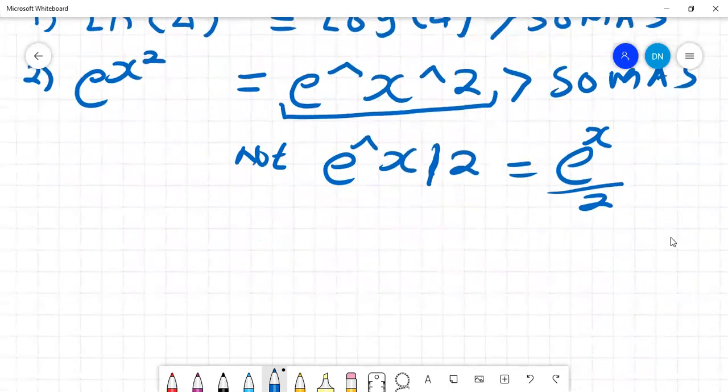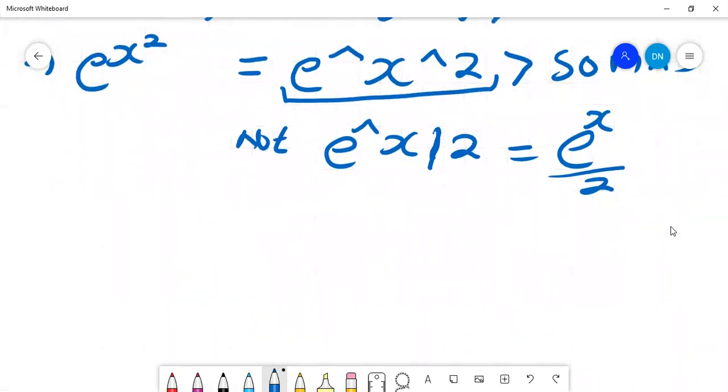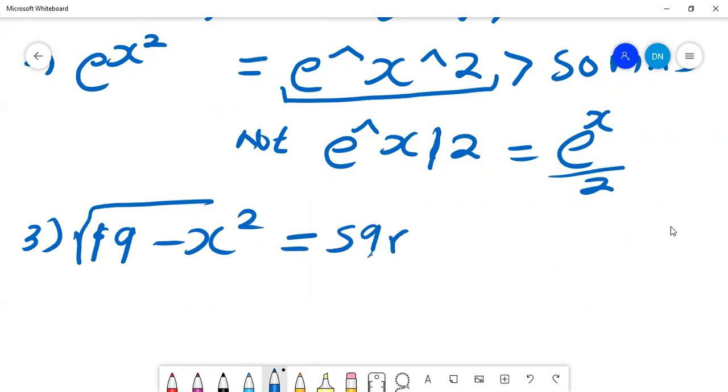If I want to write down something like a square root, for example the square root of 19 minus x squared, that is what I'll be writing in SOMAS and it will give me the left hand side because I want the square root of that.